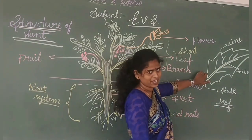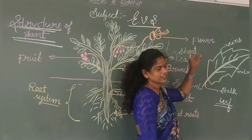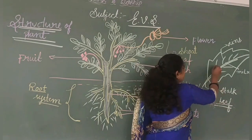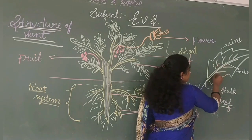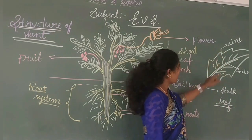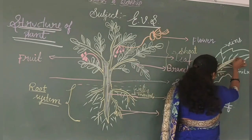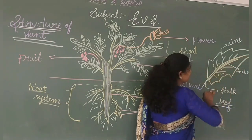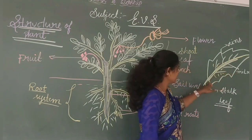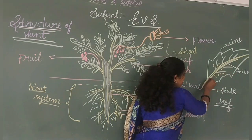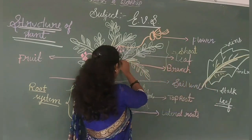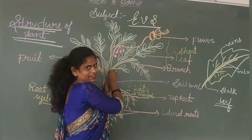Let's look at the structure of the leaf. The leaf contains certain important structures. It contains many lines — these lines are called veins. The central vein present on the leaf is known as the midrib. Next, this is known as the stalk of the leaf, and this stalk is attached to the shoot of the plant.